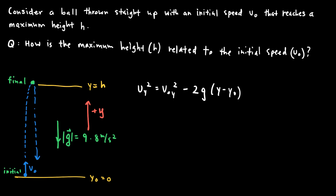Using this kinematic equation with these initial and final positions: the final velocity at maximum height is zero, because the object must momentarily stop to turn around. The initial velocity v_naught_y is just v_naught in this problem. So I write: 0 = v_naught² − 2g(h − 0), leaving g as a variable since I'm looking for the relationship rather than plugging in numbers.